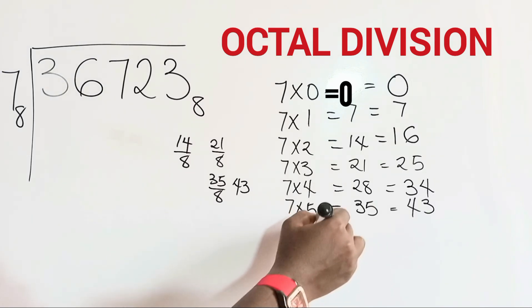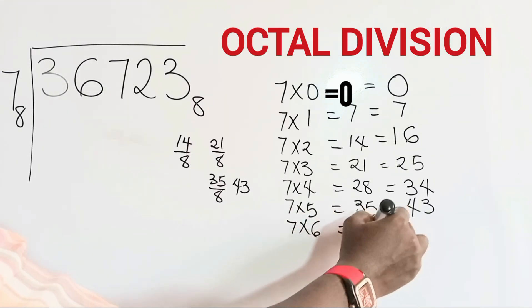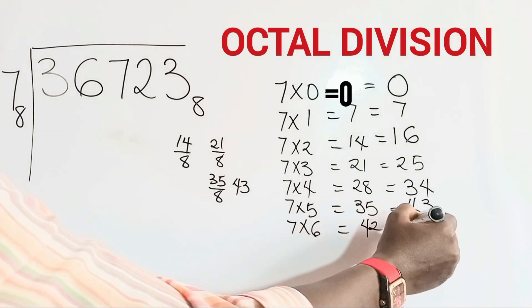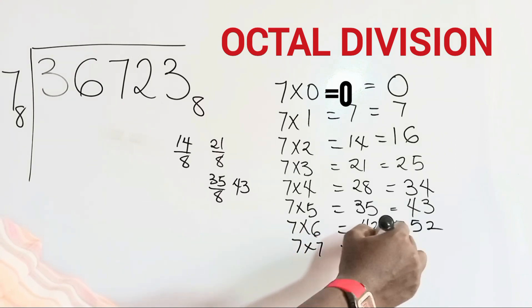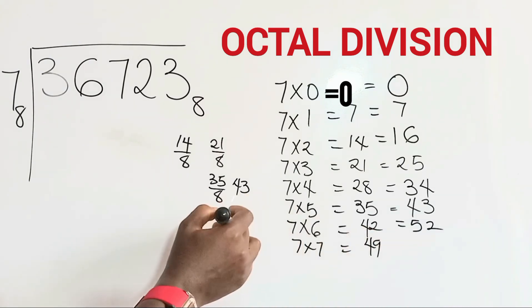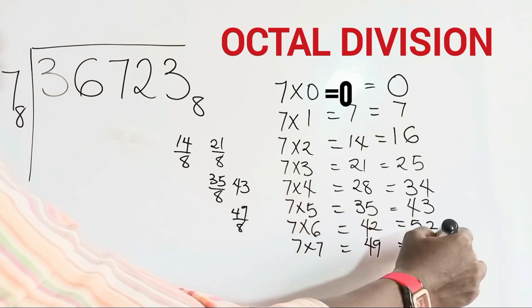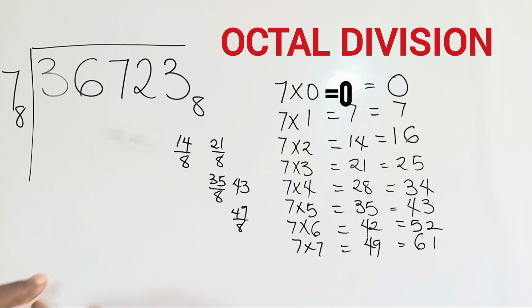7 times 6 equals 42 in base 10. We divide 42 by 8 to have 5 remainder 2. 7 times 7 equals 49 in base 10. We divide 49 by 8, we have 6 remainder 1. Because we are dealing in base 8, we cannot have 7 times 8. Instead, it will become 7 times 10. But for the purpose of this division, we will stop our multiplication table here.